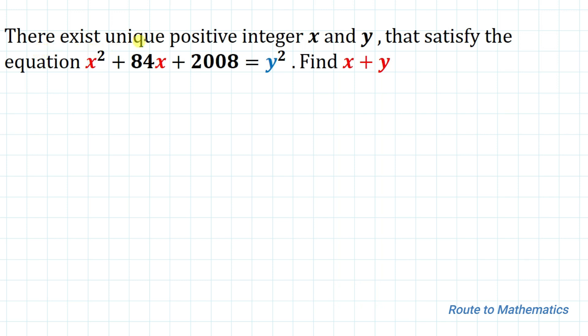The given question is: there exist unique positive integers x and y that satisfy the equation x squared plus 84x plus 2008 equals y squared. Find the value of x plus y. So here we have given an equation and we are asked to find the value of x plus y. Without any delay, let's start the solution.